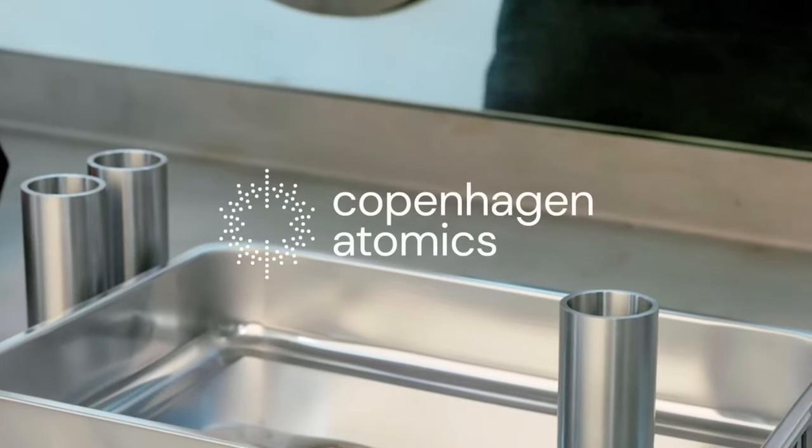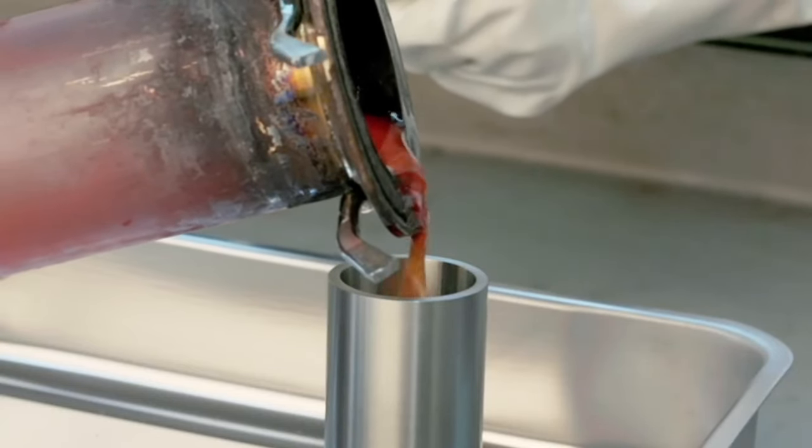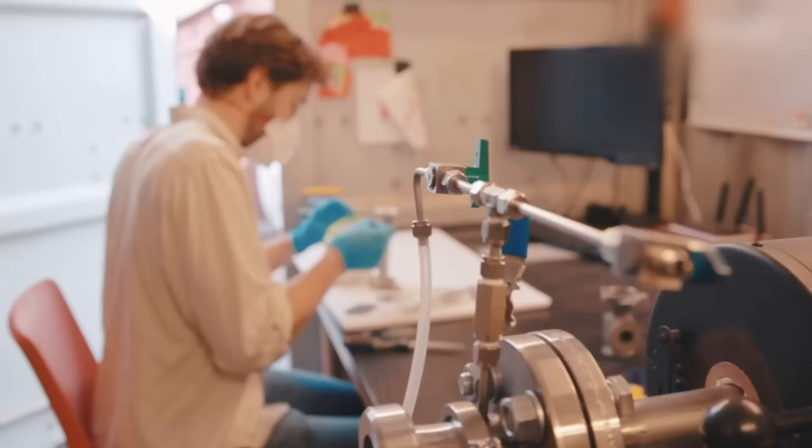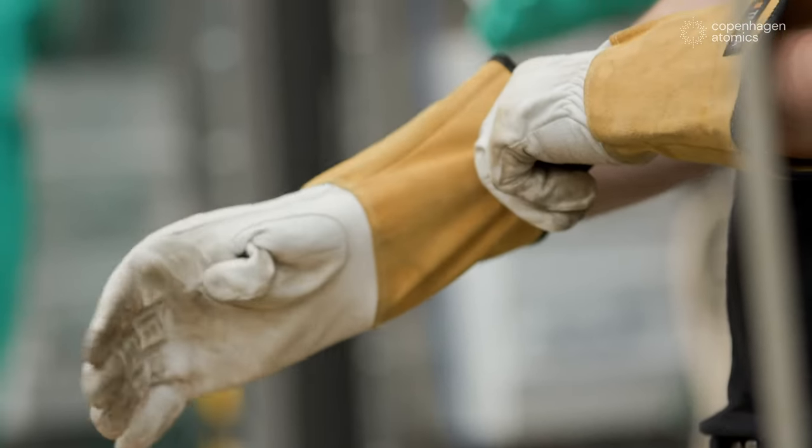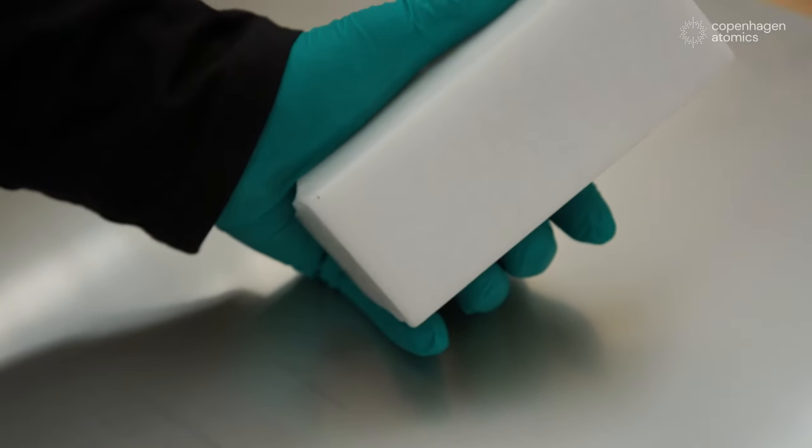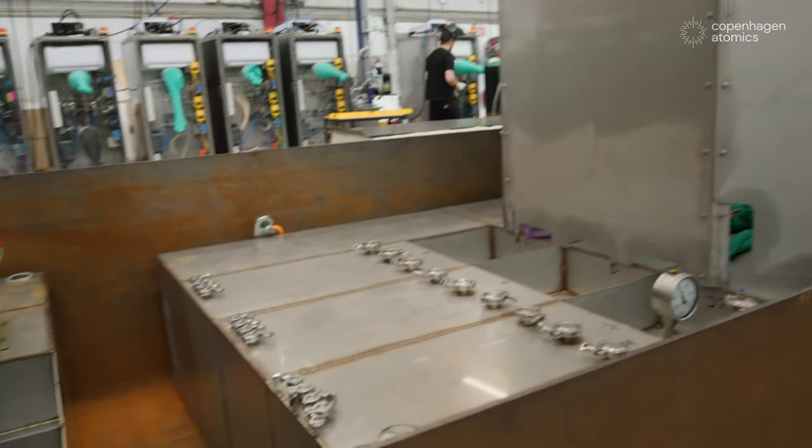Copenhagen Atomics is a Danish company that was founded in 2014 by a group of engineers, entrepreneurs, and nuclear enthusiasts. Their mission is to develop and commercialize a new type of reactor that can use thorium and burn nuclear waste, while being safe, modular, and scalable. Their vision is to provide clean and affordable energy for everyone and to help solve the climate crisis and the nuclear waste problem. Copenhagen Atomics operates from a modern facility in Copenhagen, where they have a team of about 30 people, including experts in nuclear physics, mechanical engineering, electrical engineering, software development, and business development. They also collaborate with several partners and advisors, such as the Technical University of Denmark, the European Commission, and the International Atomic Energy Agency.